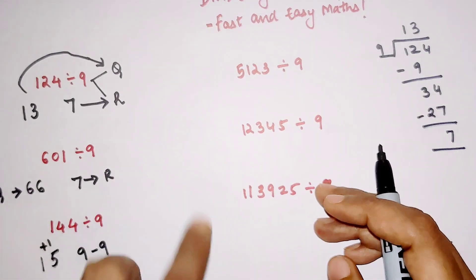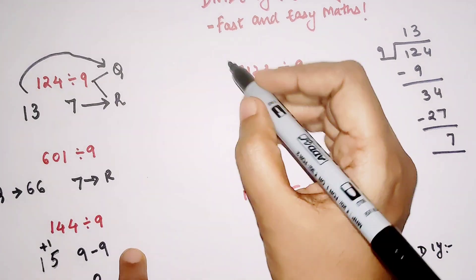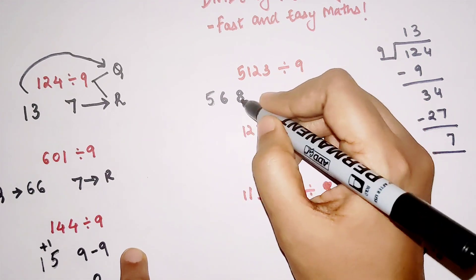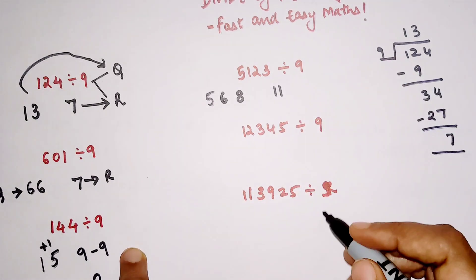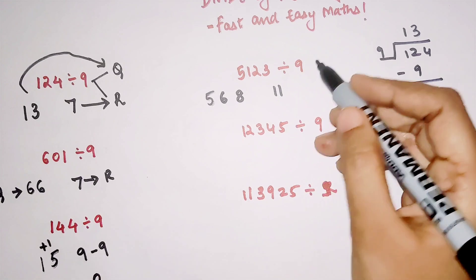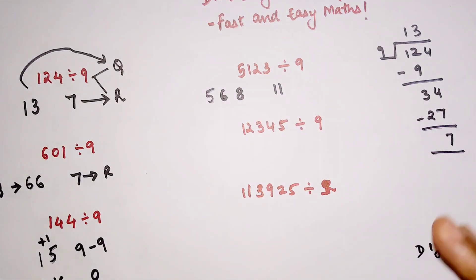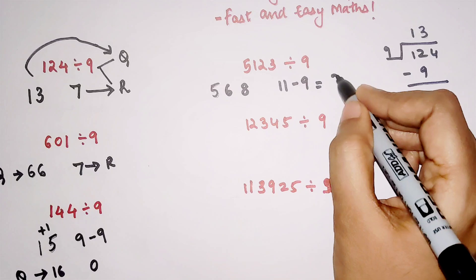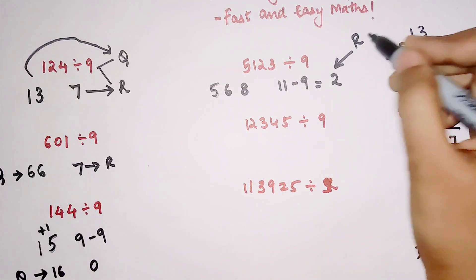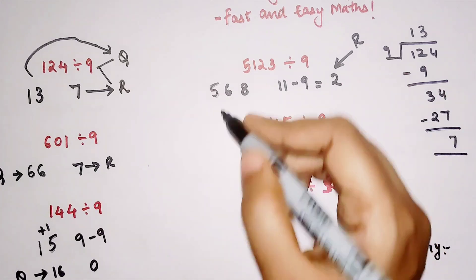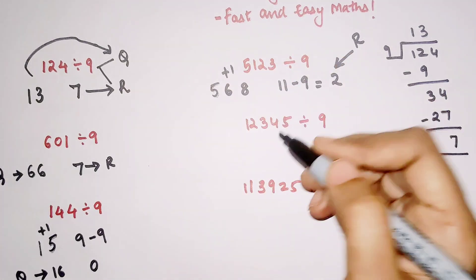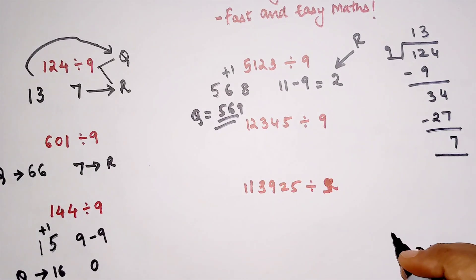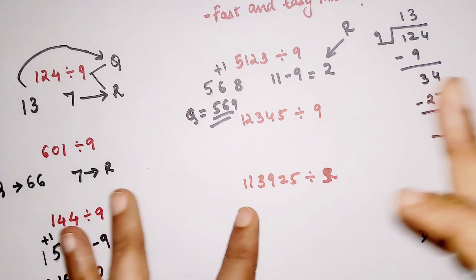So here is an example where there will be a case of carry. So again, 5 we will write as it is, 5 plus 1 is 6, 6 plus 2 is 8, and 8 plus 3 is 11. Now see, please understand, your remainder whenever you are dividing by 9, obviously has to be less than 9. If it is greater than 9, then you will subtract by 9, and whatever answer you get, in this case is 2. So that becomes your remainder, and since you are subtracting by 9 once, you will add 1 to your quotient. So your quotient now becomes 569.